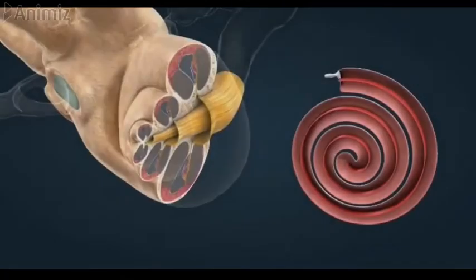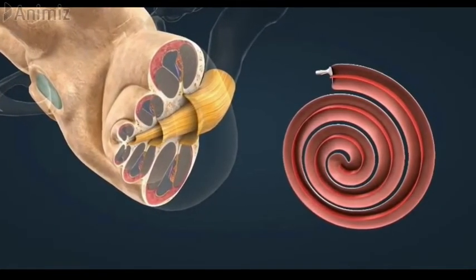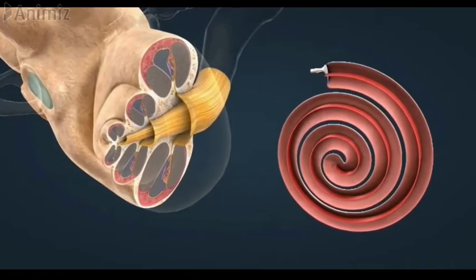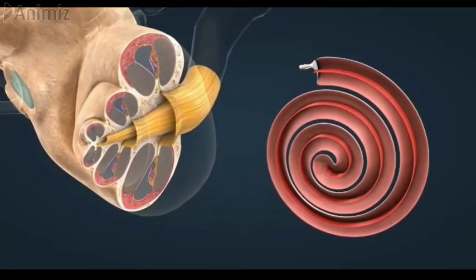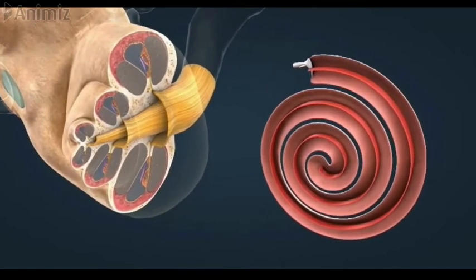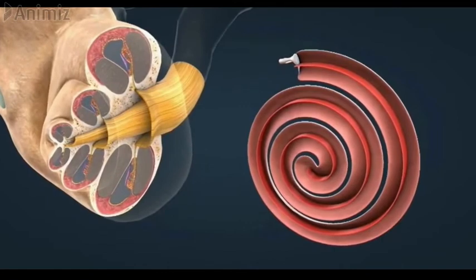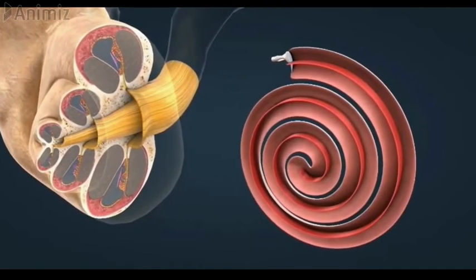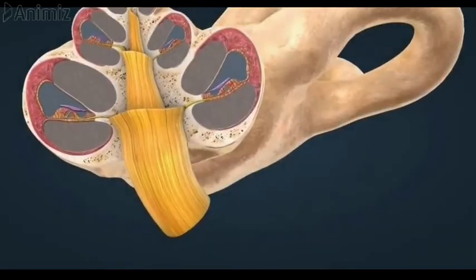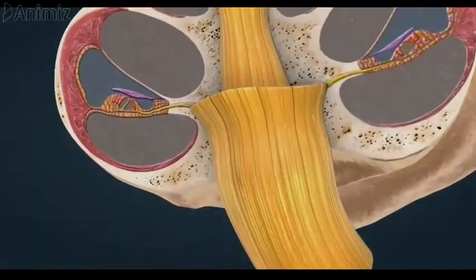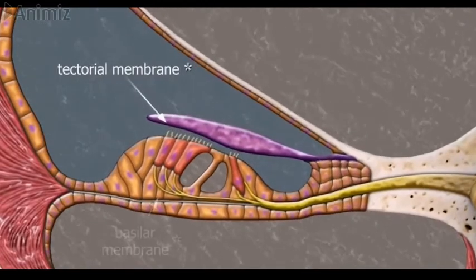What happens next is even more remarkable because, when each hair cell detects the pitch or frequency of sound to which it's tuned to respond, it generates nerve impulses which travel instantaneously along the auditory nerve. These nerve impulses follow a complicated pathway in the brainstem before arriving at the hearing centres of the brain — the auditory cortex. This is where the streams of nerve impulses are converted into meaningful sound.